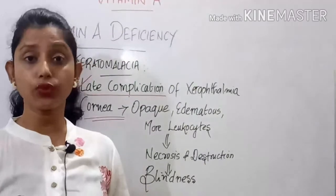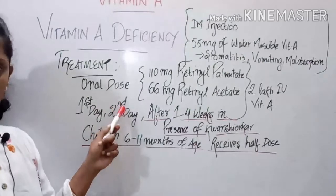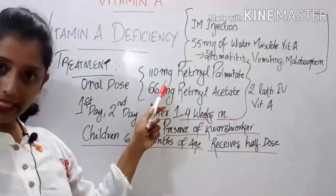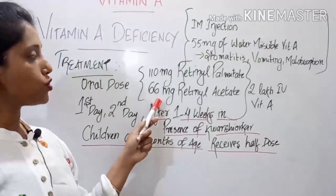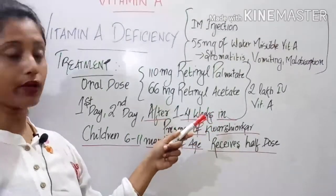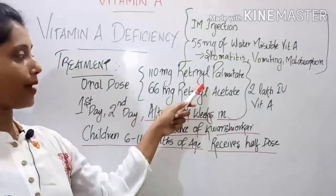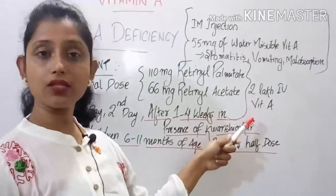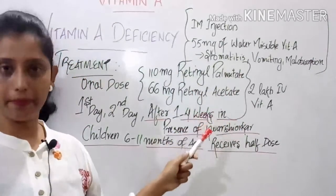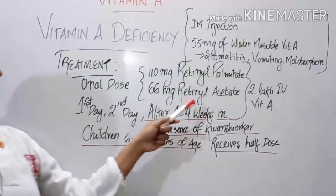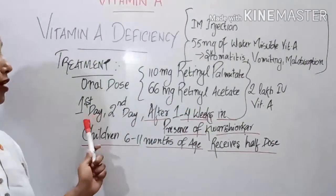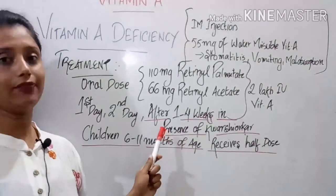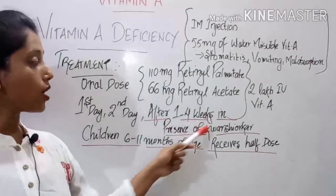For prevention and treatment of Vitamin A deficiency, the oral dose can be given as retinyl palmitate 110 mg or retinyl acetate 66 mg — both are equivalent to 2 lakh international units of Vitamin A. Treatment is started on the first day, and the same dose is repeated on the second day.